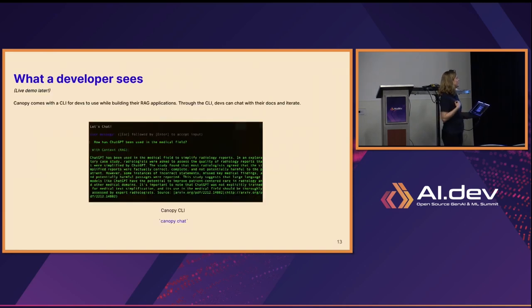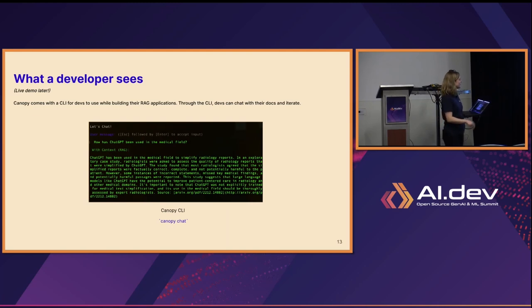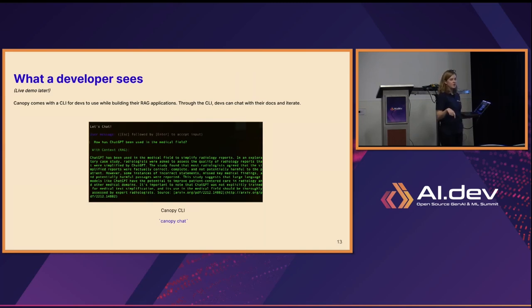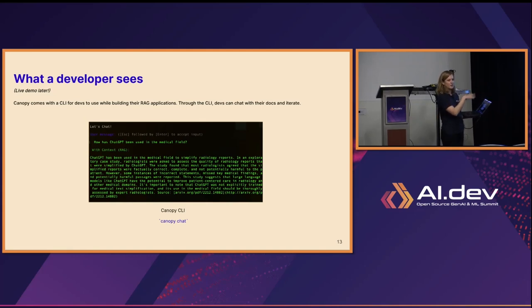This is the CLI — the first touchpoint a developer would probably see when using Canopy, where pretty much everything gets done with just a few commands. All you have to do is run `canopy chat` and you're chatting with all the documents Canopy has indexed. Notably, the CLI is a development tool for comparing and contrasting different configurations of your RAG pipeline — higher temperature, different chunk size, token overlap — so you can figure out which configuration is best before going to production.